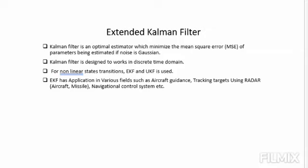For nonlinear state transition, the Extended Kalman Filter and the Unscented Kalman Filter are used. The Extended Kalman Filter has applications in various fields such as aircraft guidance, tracking targets using radar such as aircraft or missiles, and navigation control.